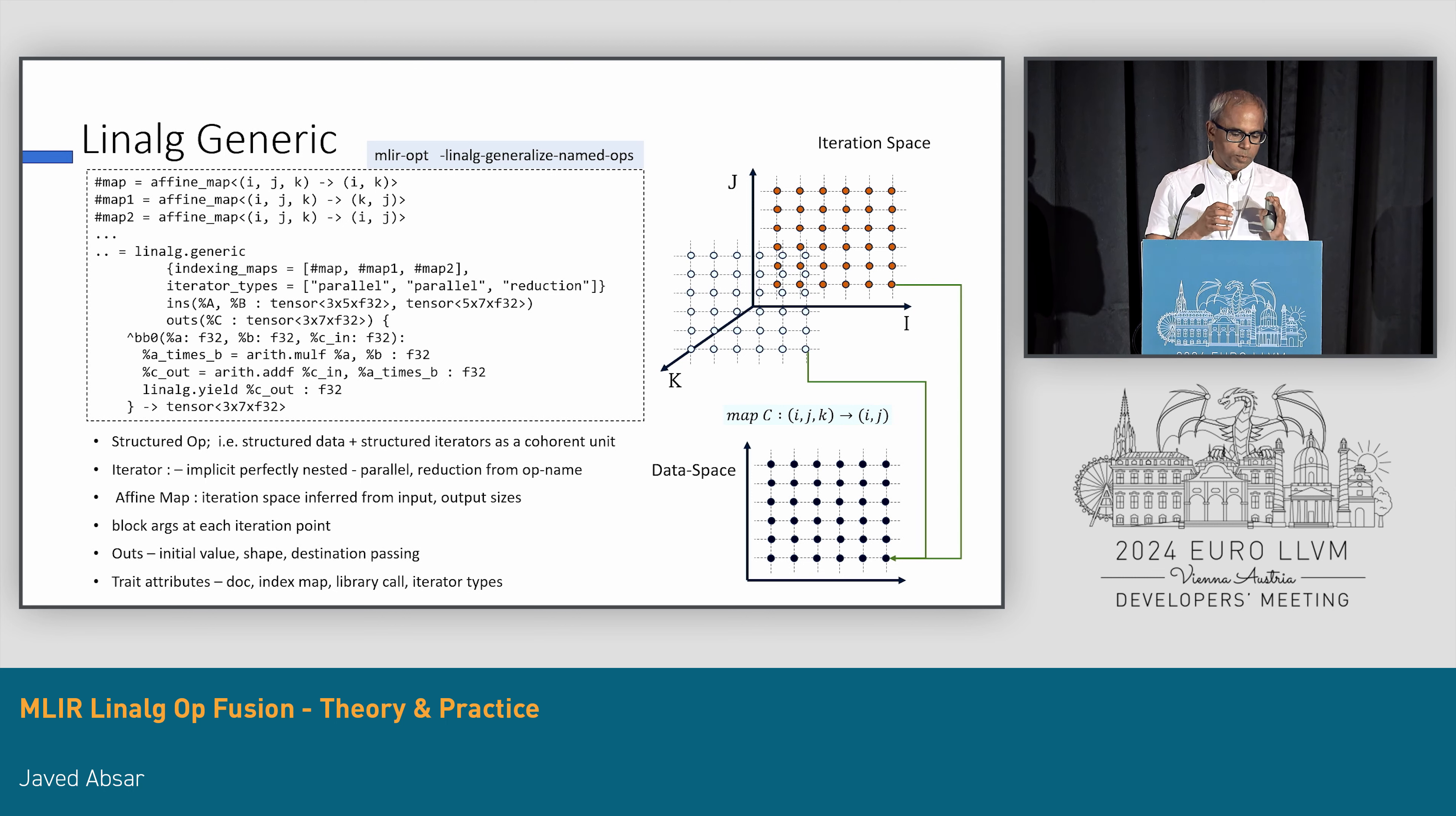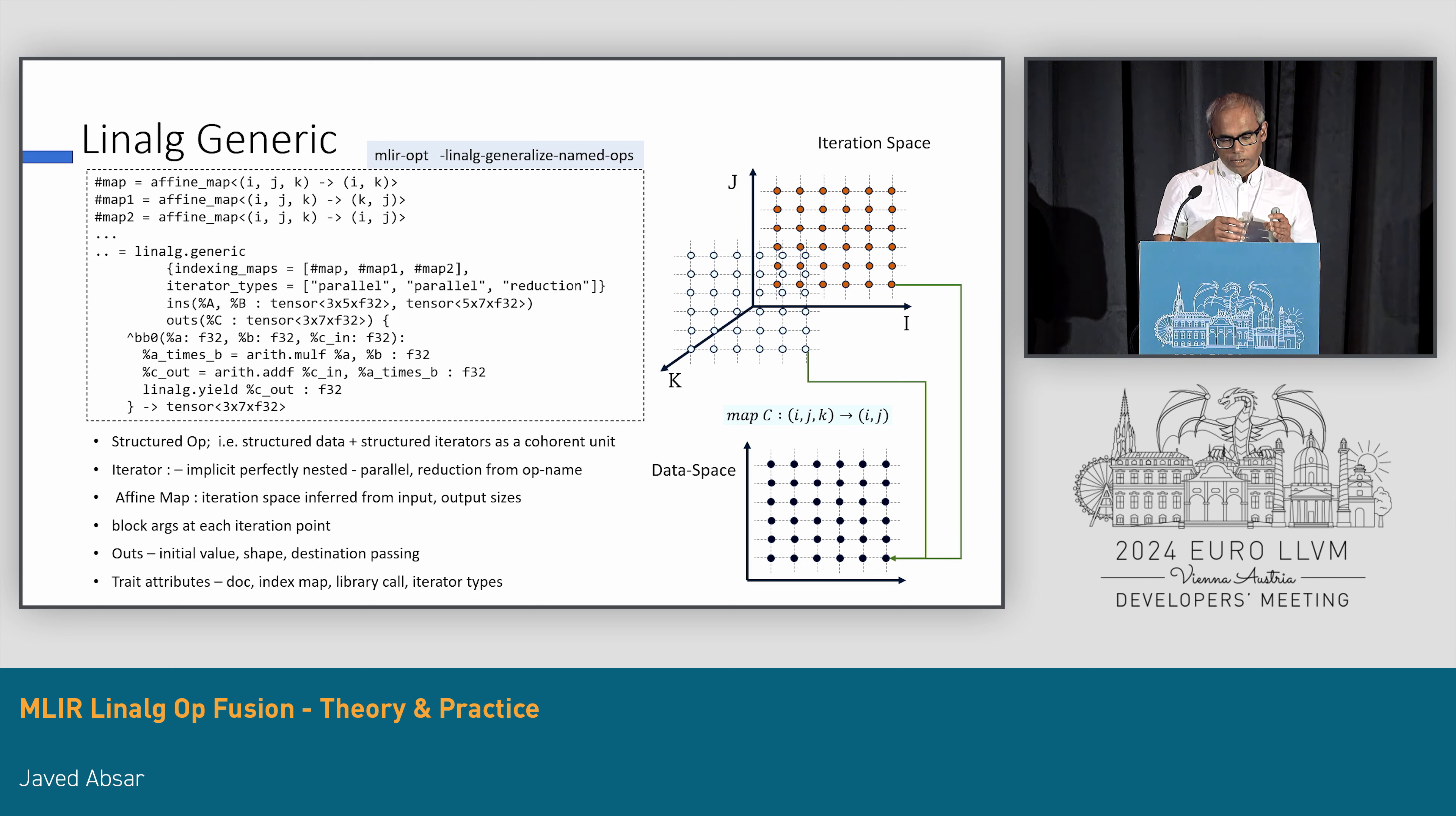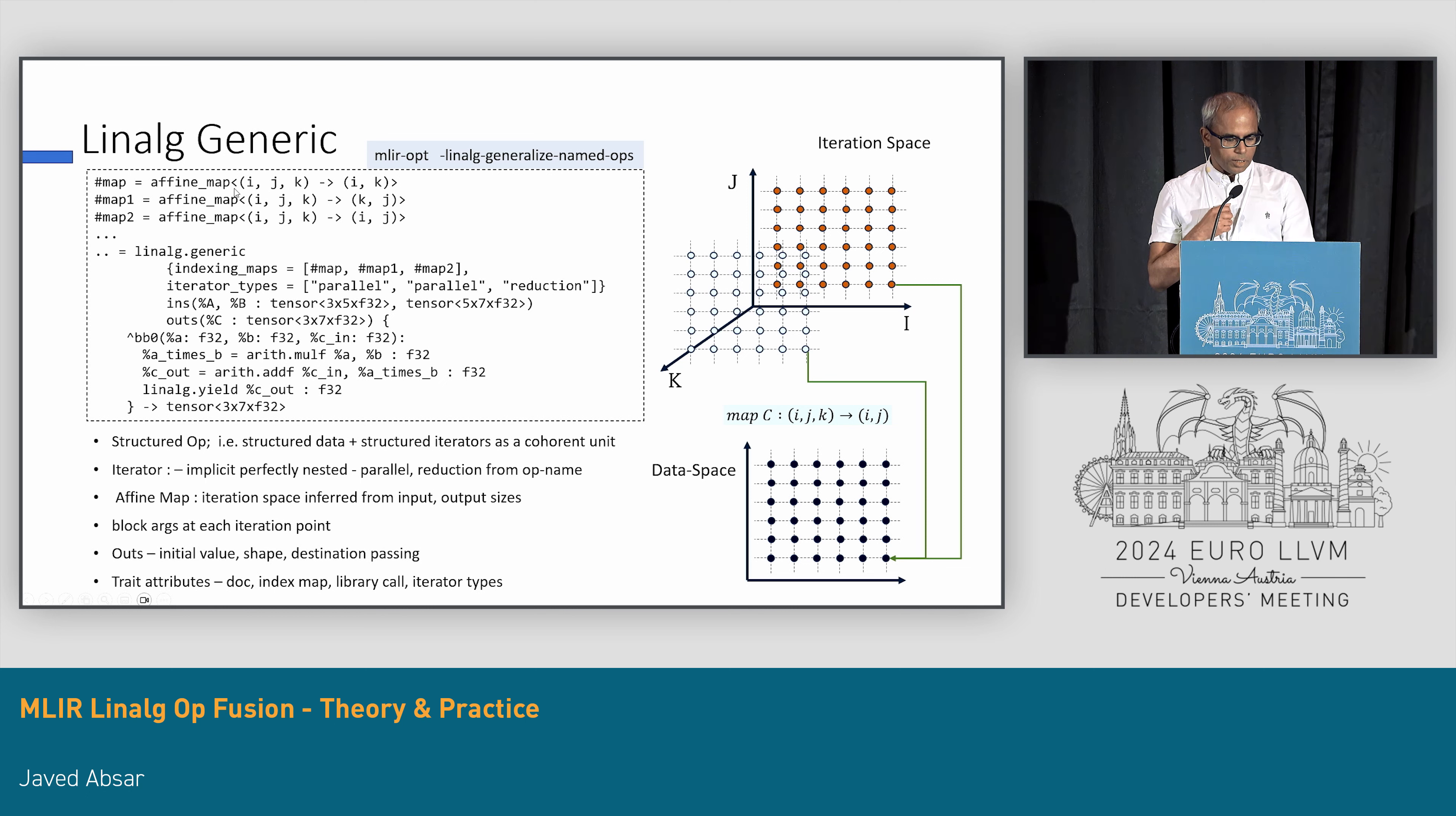I'll spend some time on this slide so that everybody understands. Linalg generic is a structured op. What it means is structured data, tensor or memref, plus structured iterator. In the case of linalg generic, it's really an implicitly, perfectly nested loop. These working together as a coherent unit. In this case of a matrix multiplication, you can see here it's a three-level nested loop. The first two are parallel, and then there's a reduction. Let's call the loop iterators i, j, k. You can give any name. It's just a symbolic name.